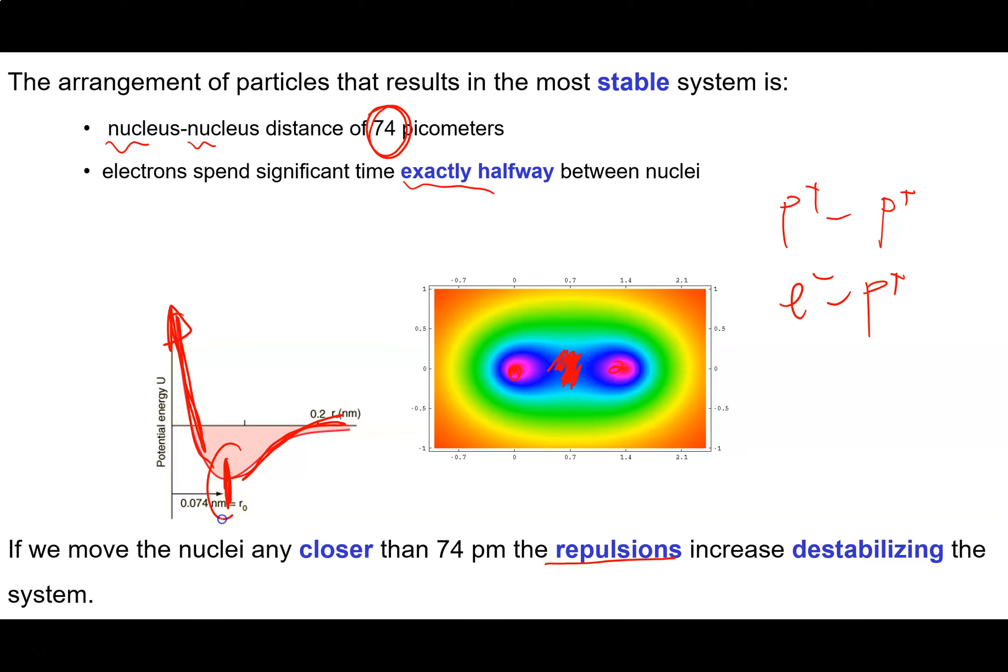So it turns out that the perfect arrangement of particles that maximizes the attractions while minimizing the repulsions is when the electrons sit in between the two nuclei, and the two nuclei are exactly 74 picometers apart from each other.